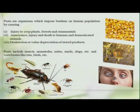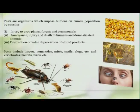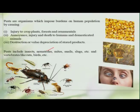The pest can be anything, not only insects — it can be a nematode, mites, snails, slugs, etc., and even mammals like rats and birds. But in this course, we are mainly concentrating on insects as a major pest.